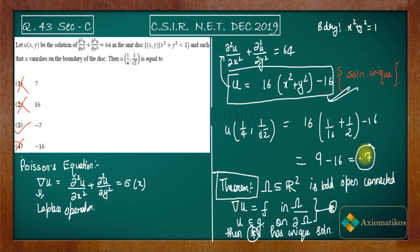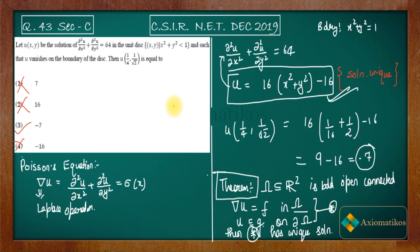Solving Poisson's equation in general is difficult, and you don't need to do it in the exam. The examiner wants you to think of an example that satisfies both the boundary condition and the differential equation. If you have any doubts, ask in the comment section or join our WhatsApp and Telegram groups — links are in the description.